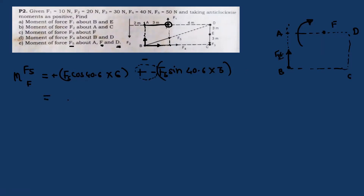After calculating, observe the sign of the result. If positive, the moment is anticlockwise; if negative — say −300 N·m — this means the net moment by F5 about point F is 300 N·m clockwise. The magnitude and direction together give the final representation of the moment.